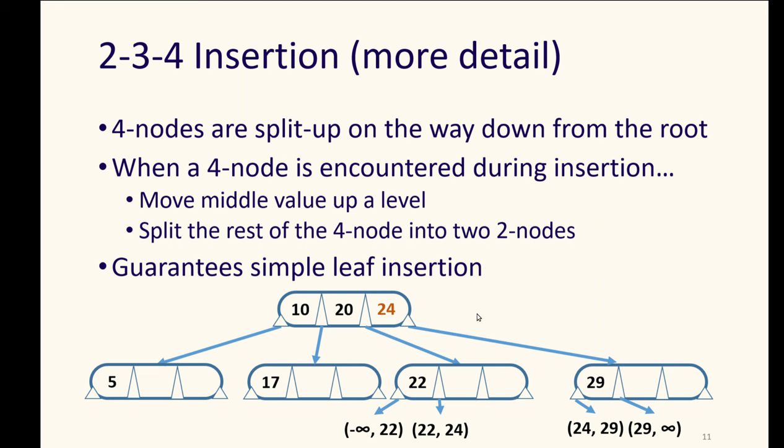So we then split the rest of the four node into two two nodes. This creates even more space down here at the bottom level. And that guarantees that we will be able to do simple leaf insertion of whatever new value. So for example, in this case, I had been trying to add 33 to this tree, I would have found that it needed to go in that node that had 22, 24, and 29. There wasn't space for it. So I brought the 24 up, the middle value up, then I split the other two values to be two separate nodes, and I would see that 33 needed to go into the last node over here with 29.